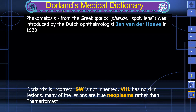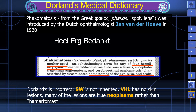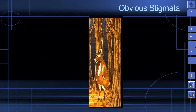A very wise Greek man once said that the beginning of understanding is definitions. Dorland's Medical Dictionary tells us the term phacomatosis was coined in 1920 by a Dutch ophthalmologist. It comes from the Greek word phacos, meaning mother spot, and describes four inherited syndromes — neurofibromatosis, tuberous sclerosis, and cephalotrigeminal angiomatosis — characterized by disseminated hematomas of the eye, skin, and brain. But Dorland's is incorrect: Sturge-Weber disease is not inherited, Von Hippel-Lindau has no cutaneous findings, and many lesions are neoplasms rather than hematomas. So all I want to say to the Dutch ophthalmologist is: thank you very much.